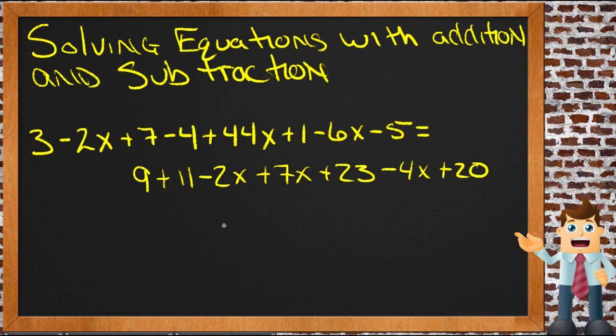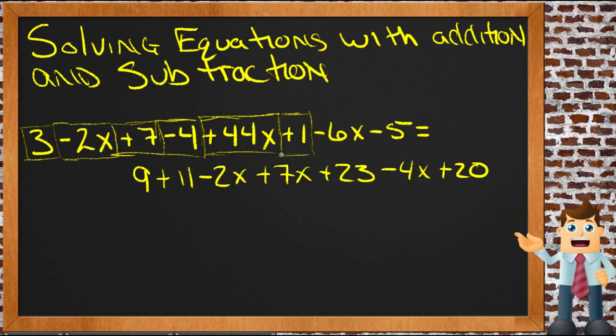The first thing you're going to want to do here is I would group the things that are the same together and rewrite the problem with all of your variables together and all of your numbers together. Sometimes it helps, particularly in a long problem like this, to think of the individual numbers, the individual terms, as sort of modules that you can move around to your heart's content as long as you keep the signs with the left of each number, each term, along with that number.